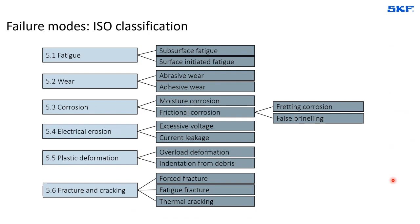It is also important to understand that the ISO refers to the most visible change in appearance — something you should be able to see with your own eyes or with small magnification. A typical example is that we tend to identify a fracture on a ring as the main failure, and fractures are mentioned in the standard. But in most cases, the fracture is the consequence of something else that was happening. If you focus on the fracture, you might not be focusing on the proper failure mode you can act on, because the fracture was a consequence and not the cause.